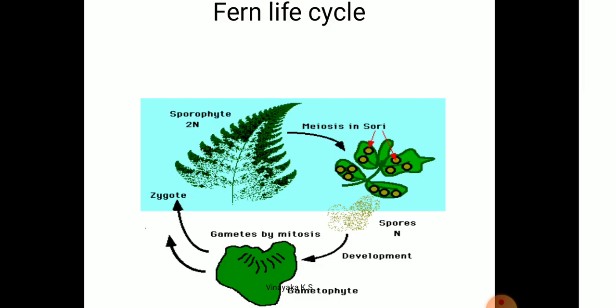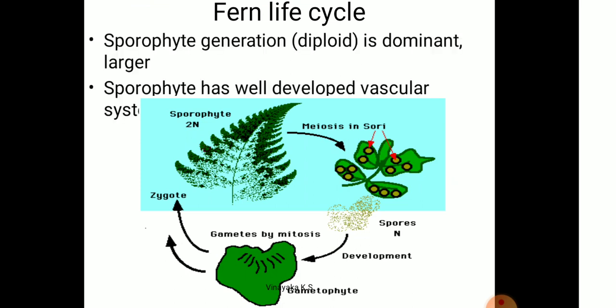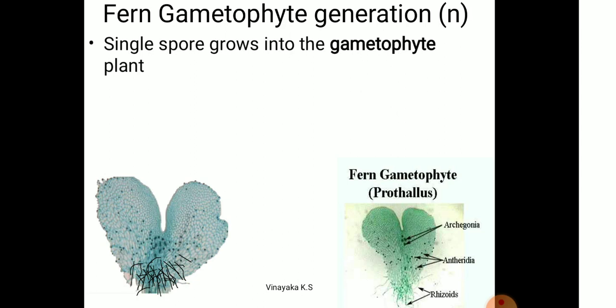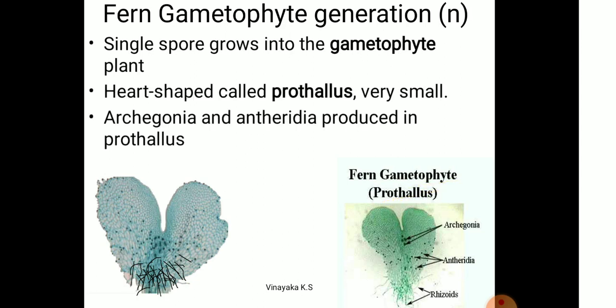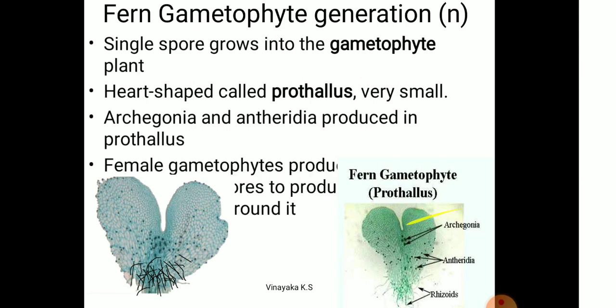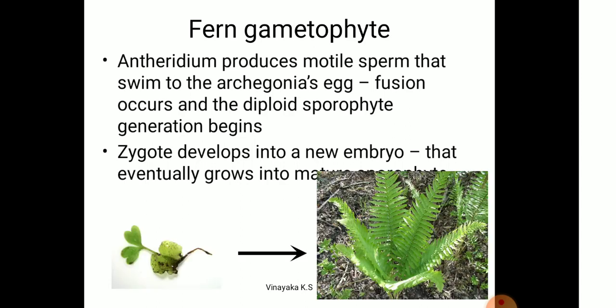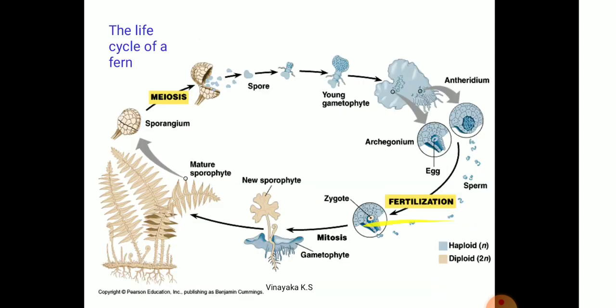The complete life cycle of the fern: the sporophyte is diploid in nature and the gametophyte is haploid (n). The green heart-shaped structure is the gametophyte, and the leafy structure is the sporophyte. The sporophytic generation is diploid and dominant, with a longer duration compared to the gametophyte. The prothallus is heart-shaped and produces antheridia and archegonia. The zygote develops into a new embryo, which develops into the whole plant.